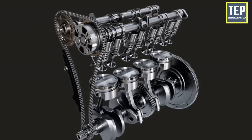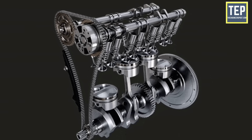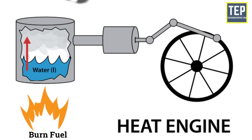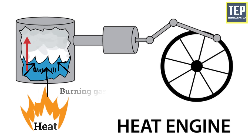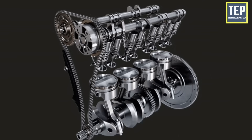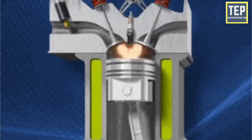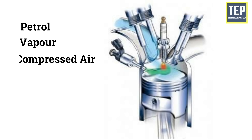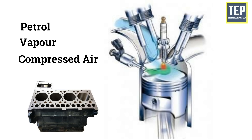An engine is a machine designed to convert one form of energy into mechanical energy. Heat engines burn fuel to create heat which is then used to do work. It is a complex machine built to convert heat from burning gas into the force that turns the wheels. The chain of reactions is set in motion by a spark which ignites a mixture of petrol vapor and compressed air inside a momentarily sealed cylinder, causing it to burn rapidly.